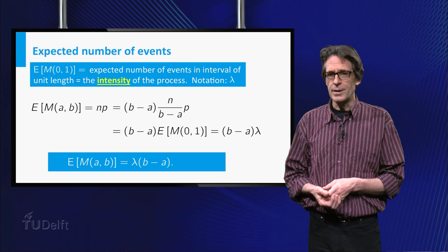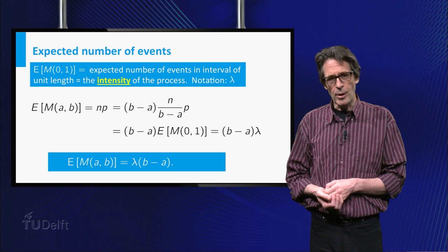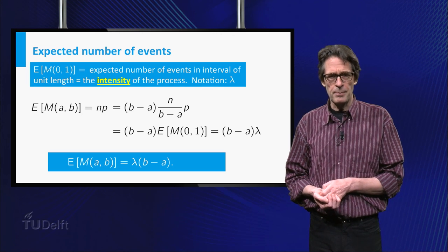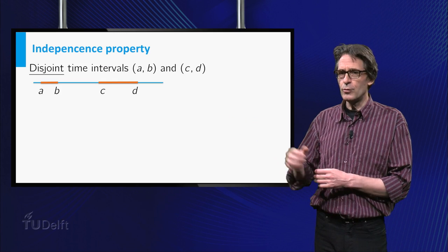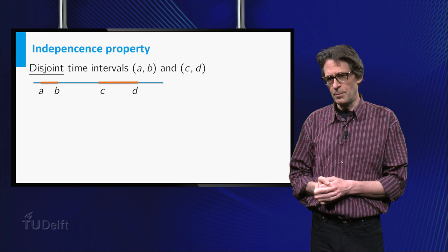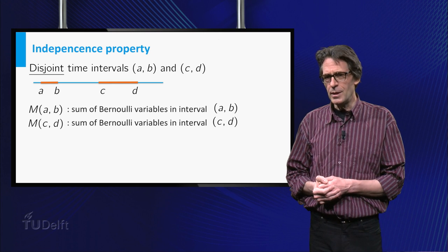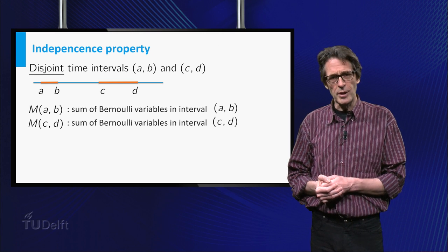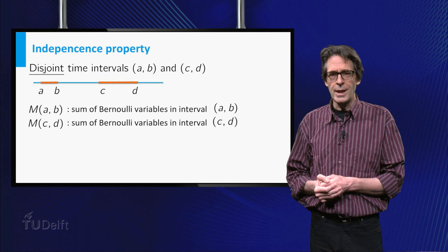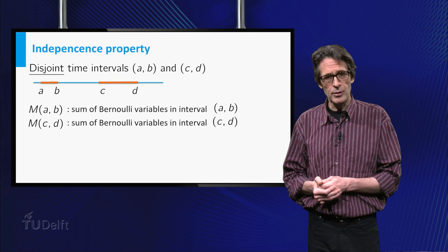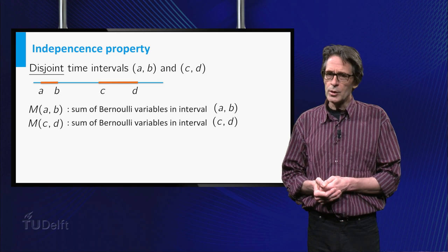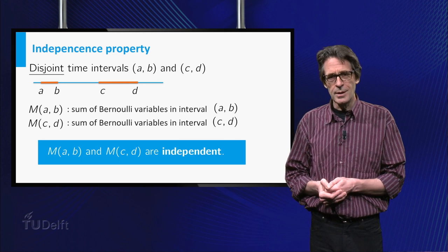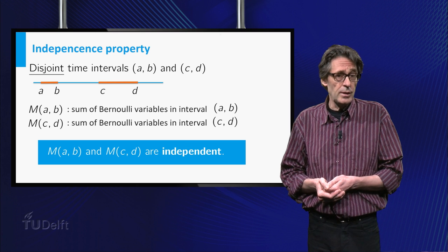There is another property that emerges from our construction of the process M. Consider two disjoint intervals, say (a,b) and (c,d). Then M(a,b) is based on a certain chunk of independent Bernoulli variables, and M(c,d) is based on a different set of Bernoulli variables. So the random variables M(a,b) and M(c,d) will be independent too.